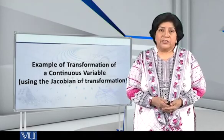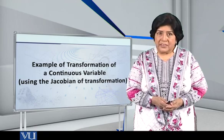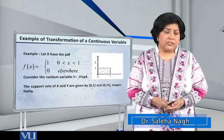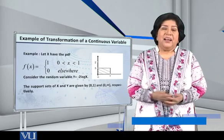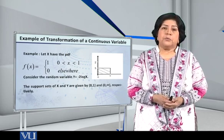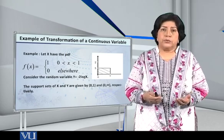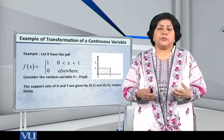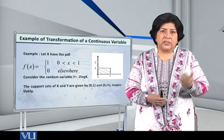Here students, let me present to you an example of the transformation of a continuous variable using the Jacobian of transformation. Let us consider the uniform distribution given by f(x) = 1 on the interval 0 to 1, and equal to 0 elsewhere. This is our simple uniform distribution and its graph is like a rectangle. Now, suppose that we are interested in considering the transformation y = -2 log(x), and we want to find the distribution of y.